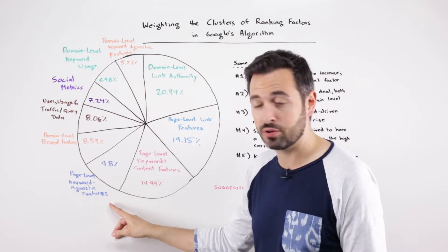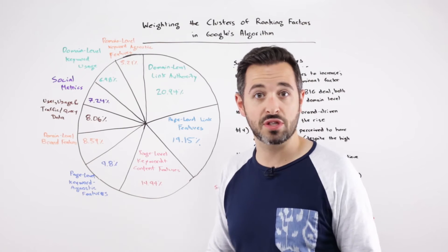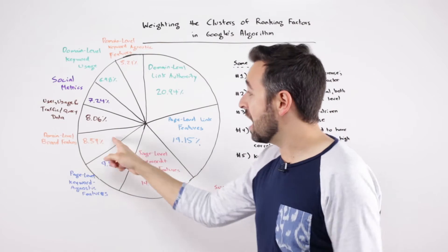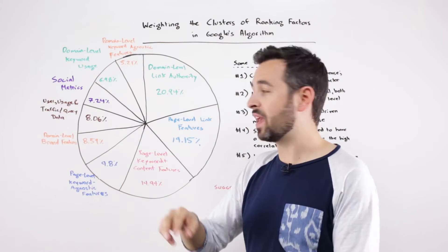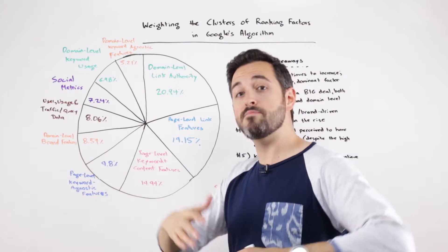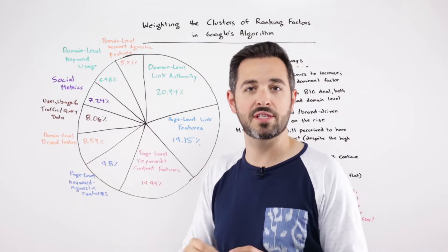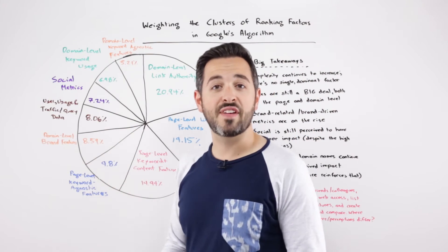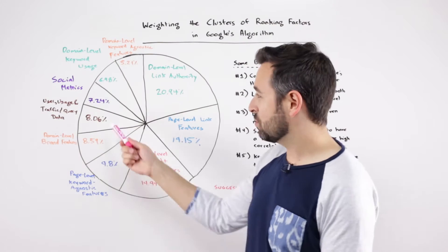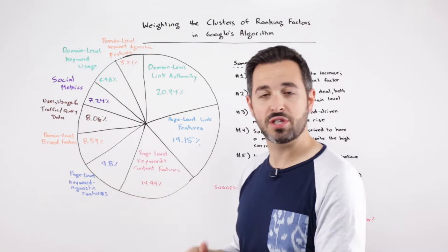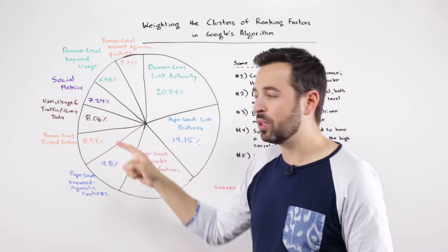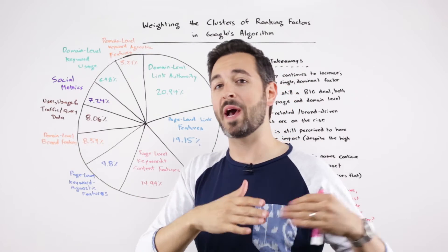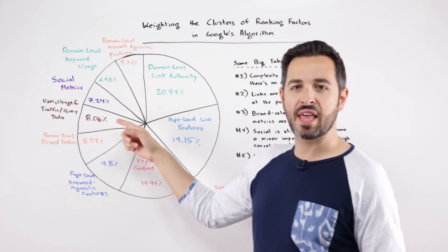Page-level keyword agnostic features might be like how much content is on the page, to what degree Google might be analyzing the quality of the content, are there images on the page, how fast does the page load. Domain-level brand features: does this domain or the brand name associated with the website get mentioned a lot on the internet? User usage and traffic or query data got an 8.06%, which is smaller but still sizable. This is something that's been on the rise — in years past it had always been under 5%.